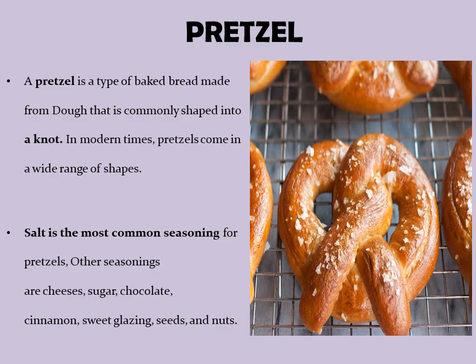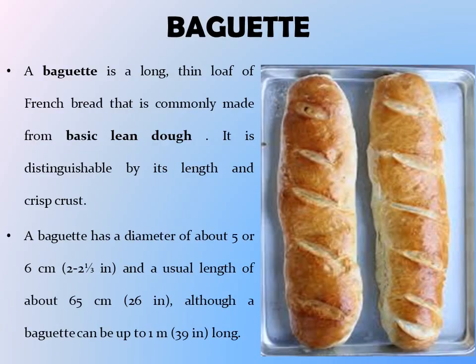On number eight, we have baguette. A baguette is a long thin loaf of French bread that is commonly made from basic lean dough. It is distinguishable by its length and crisp crust. A baguette has a diameter of about 5 or 6 cm and a usual length of about 65 cm, although a baguette can be up to 1 meter long.